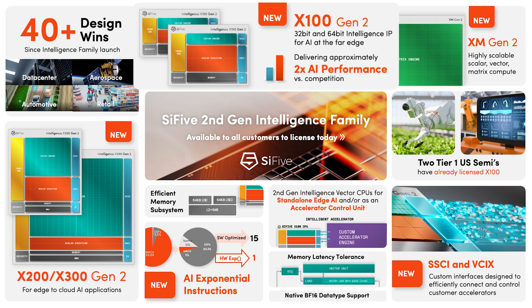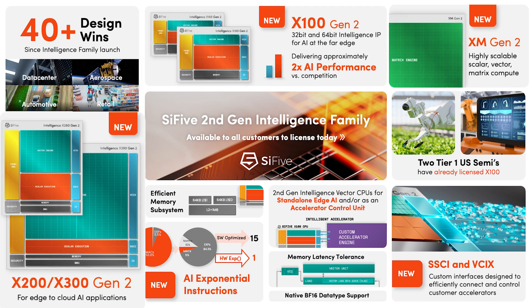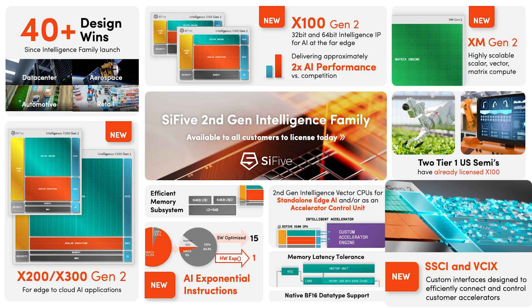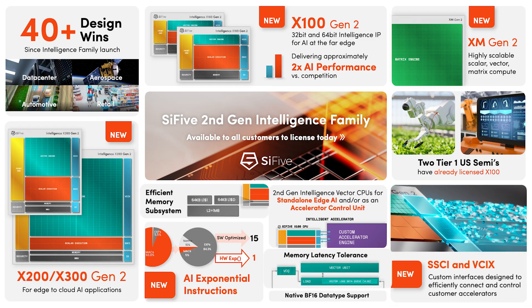In the second generation, we've added a new small member — the X100 series — that addresses both 32-bit address space and 64-bit embedded applications. The entire family from the X100 all the way up to the larger cores provides support for attaching coprocessors through the new SSCI scalar coprocessor interface as well as the vector coprocessor interface. There have been improvements to the memory subsystem in terms of configuration and throughput, and we've added new instruction set extensions to support AI functionality. We look forward to seeing how our customers use this second generation, and the great news is it's all available to license for production today.